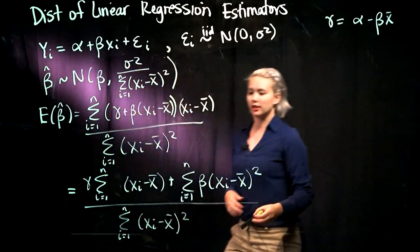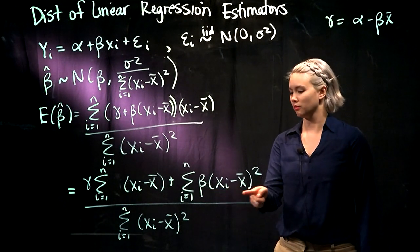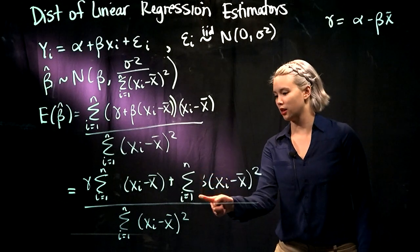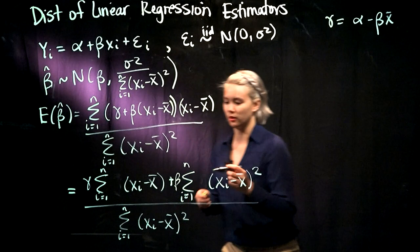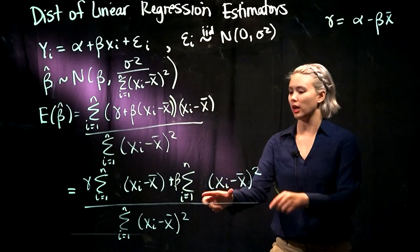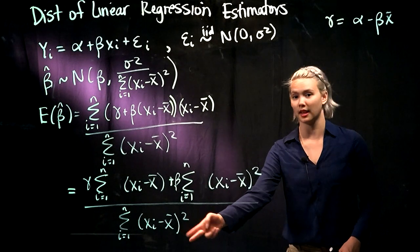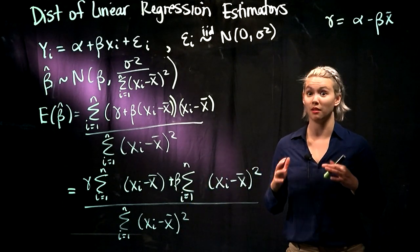So if we're looking at this, we see here we have xi minus x bar squared. And again, let's just pull out that beta, pull that beta out of the sum, so that it's really clear to see we have beta times something divided by that exact same thing. So that means that this piece is just going to be beta.